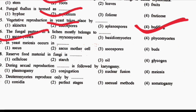Next question: in yeast, meiosis occurs in DASH. Option 1: Ascus. Option 2: Ascus Mother Cell. Option 3: Ascospores. Option 4: Bud. The correct answer is Option 2, that is Ascus Mother Cell.